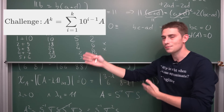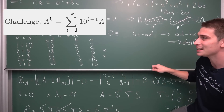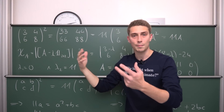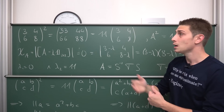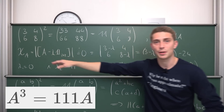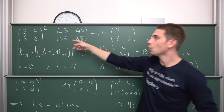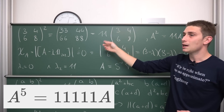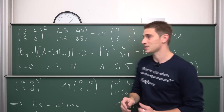There's going to be an exercise: do we have, for example, any matrix A out of the n×n matrices with real number entries where if we raise it to the third power we get 111 times the matrix itself? Or if we raise it to the fifth power, do we get 11111 times the matrix itself? You can try it out and see if you can find something.